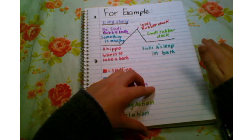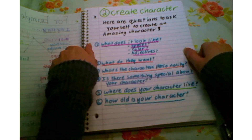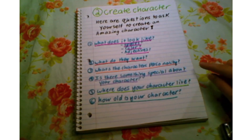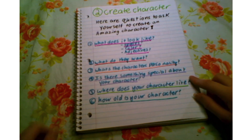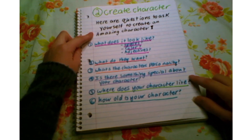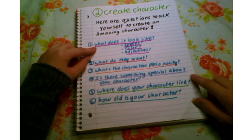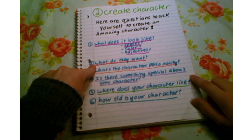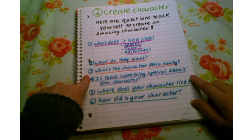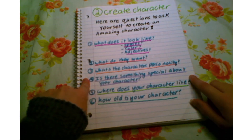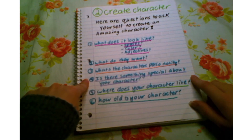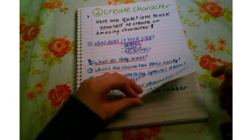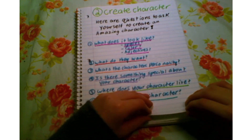The second step to creating a stop motion movie is creating a character. Here are questions to ask yourself to create an amazing character: one, what does it look like — species, color, adjectives; two, what do they want; three, what is the character's personality; four, is there something special about your character; five, where does your character live; and six, how old is your character.